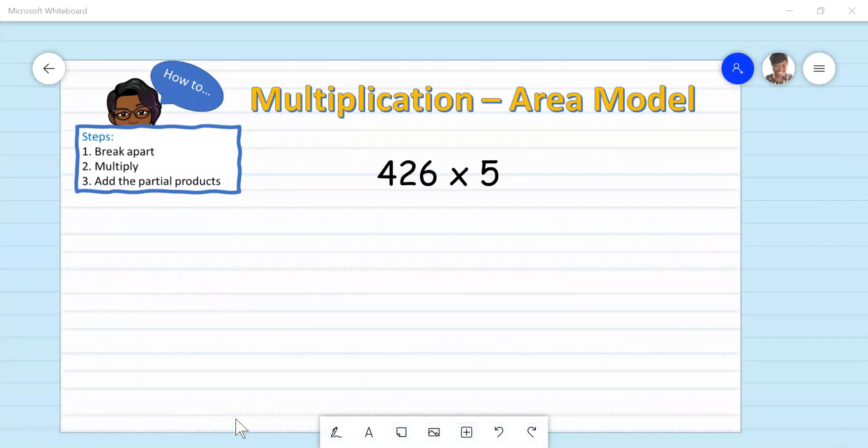Let's try another problem. This time, we will multiply a three-digit number by a one-digit number, 426 times 5. Before we create our area model, we must first break up the 426 into smaller numbers that will make it easier to multiply.